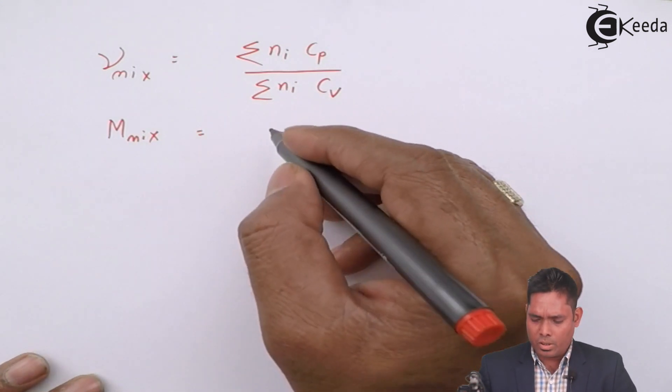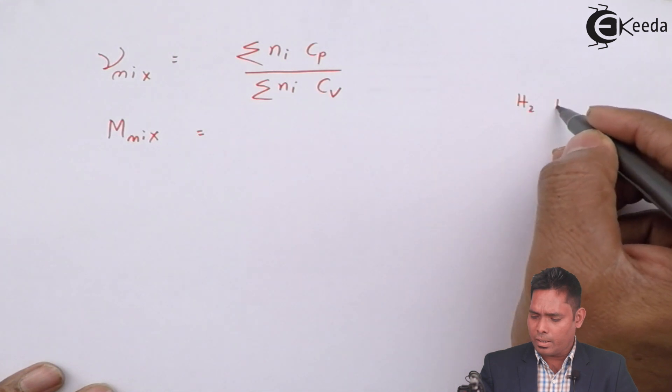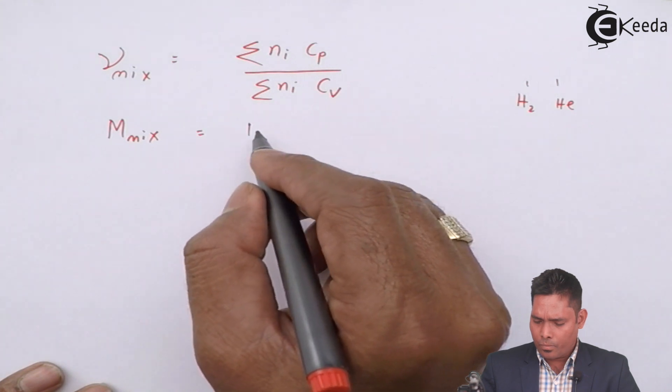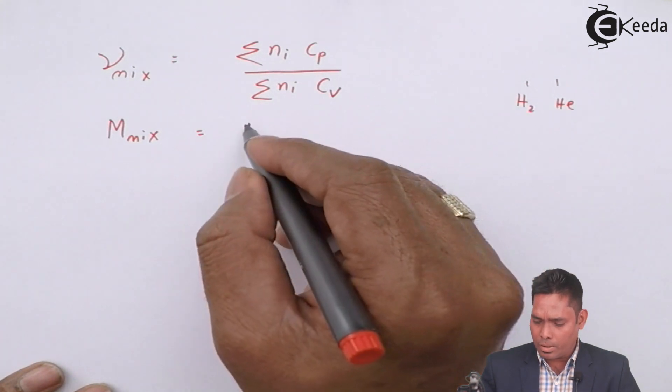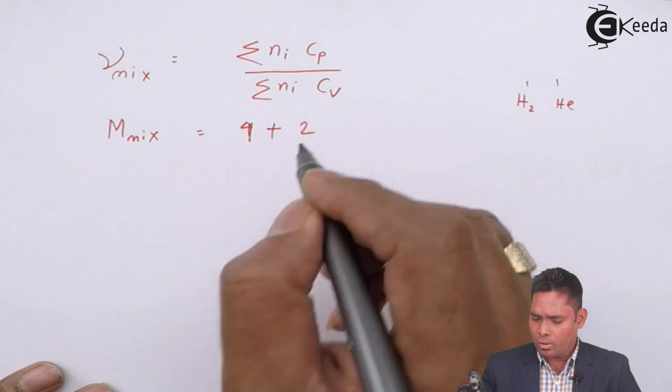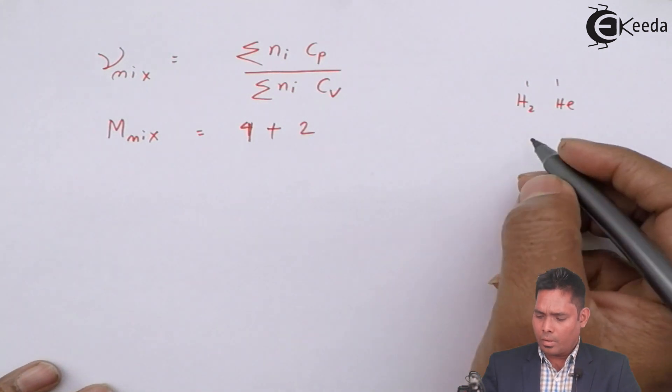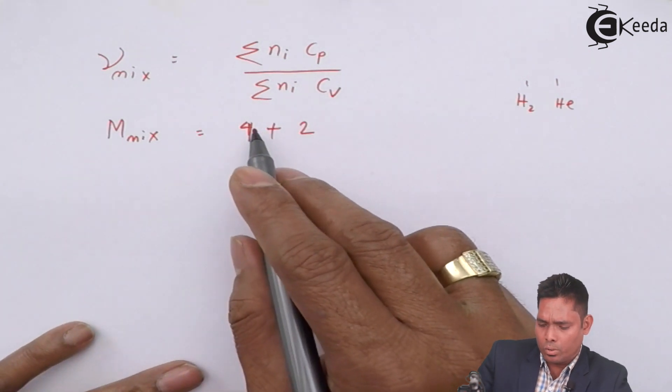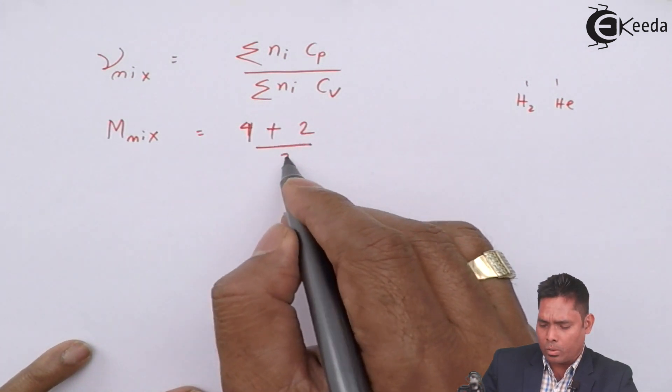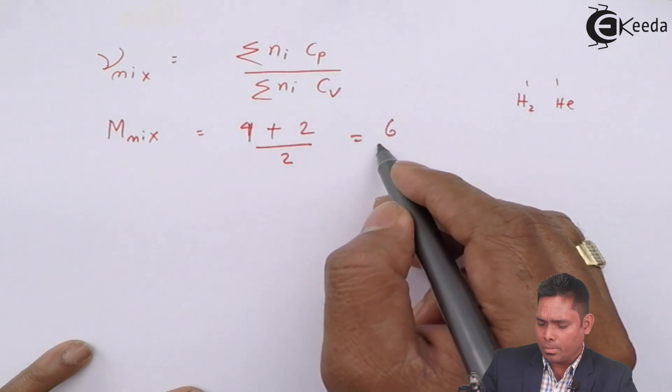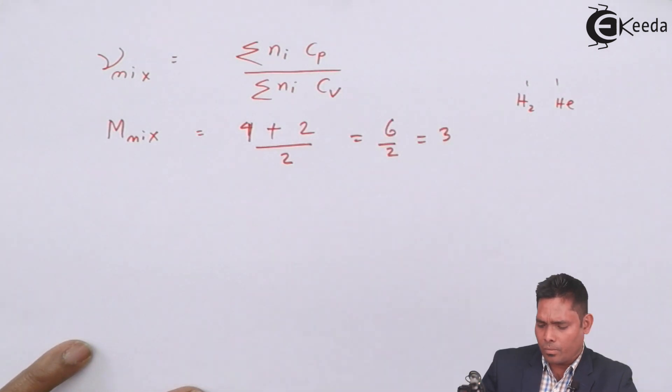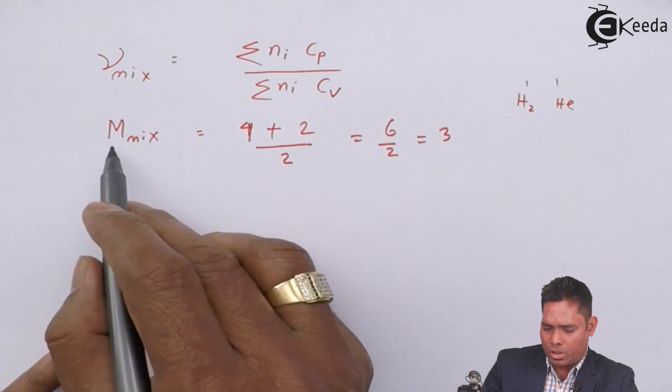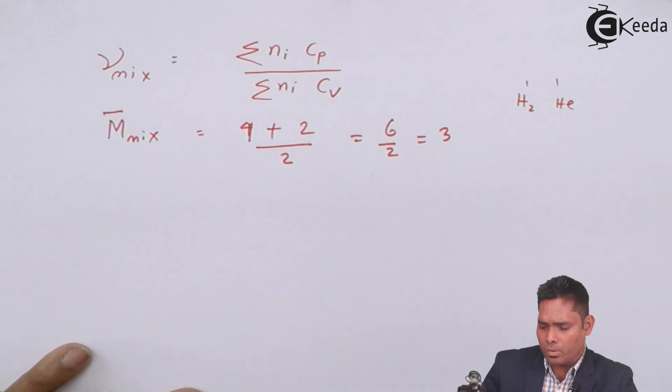Similarly, the molecular weight or molar mass of the mixture - we have hydrogen and helium, one mole each. So molar mass is 4 for helium and 2 for hydrogen, so 4 plus 2 divided by 2 equals 6/2, which is 3. So this is the average molar mass of the mixture.